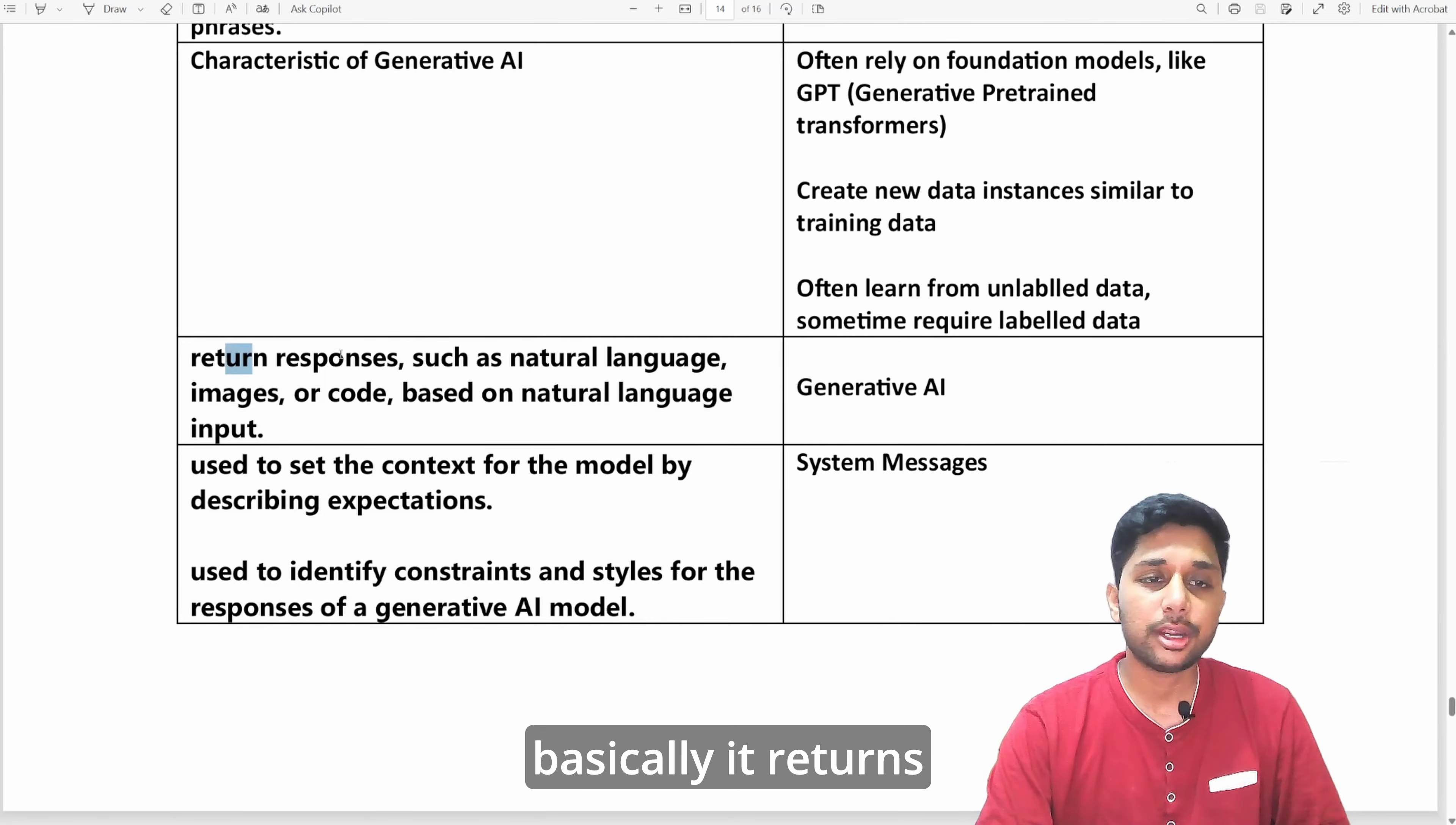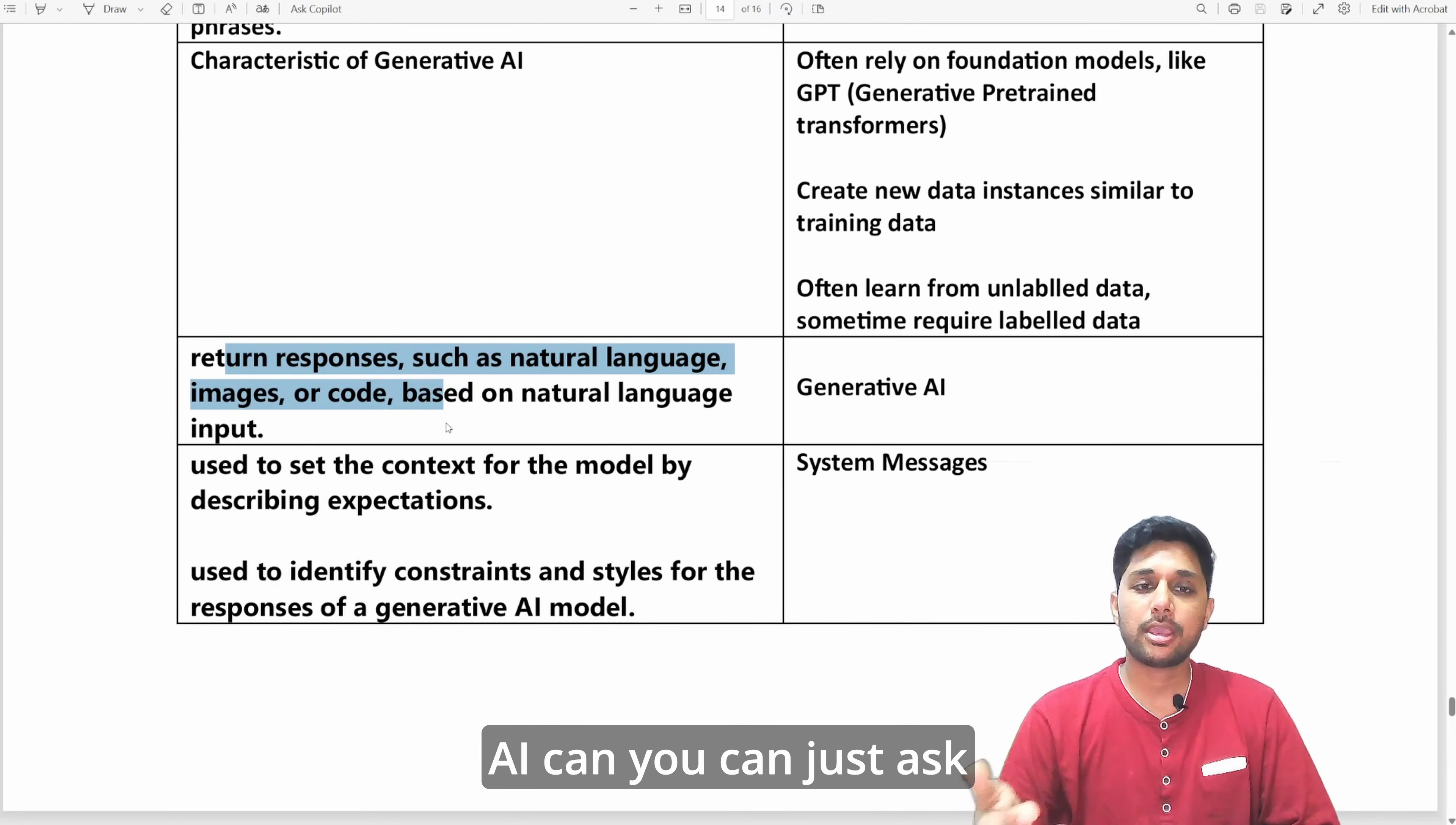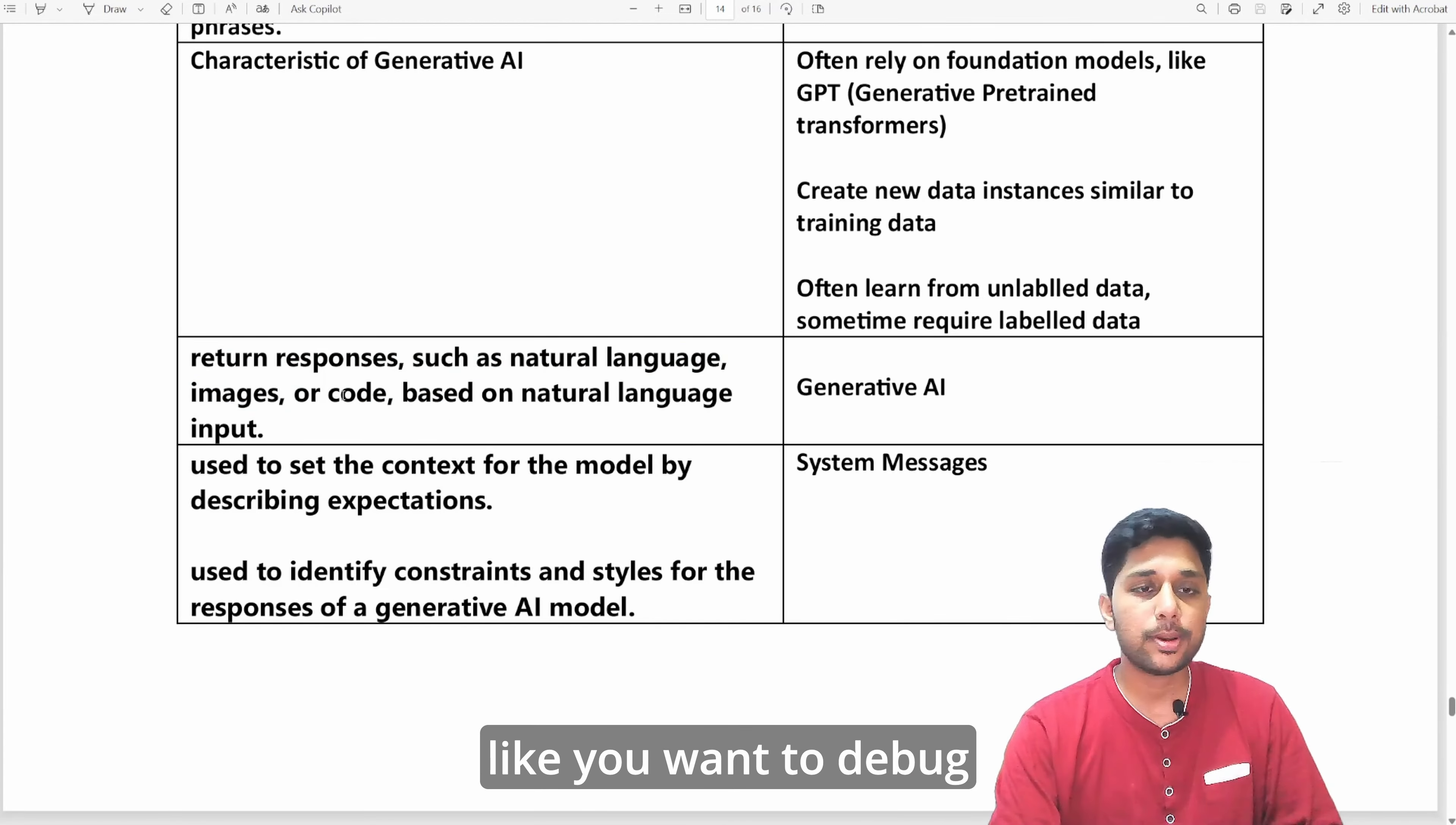As I said, generative AI returns responses such as natural language, images, code nowadays. Generative AI can, you can just ask it to generate an image of a cat and it can return it, you can ask it to write an email or an essay.